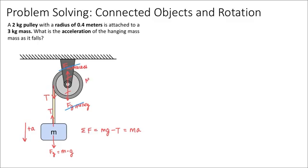We'll use big M for the mass of the pulley. Rearranging, the acceleration of the hanging mass equals mg minus the tensional force, divided by the mass of the hanging mass. Since I don't know the tension in the rope, I need to either solve for tension first or get a second equation relating tension and acceleration.